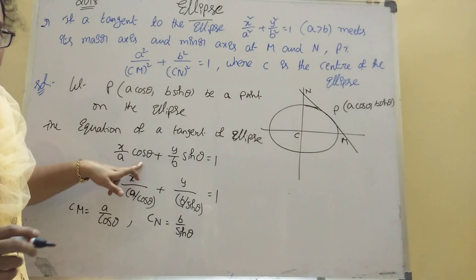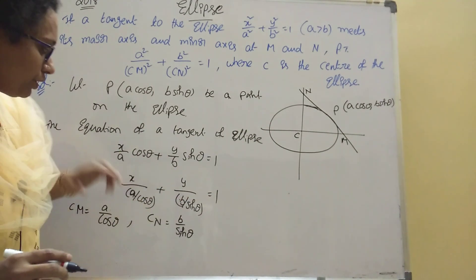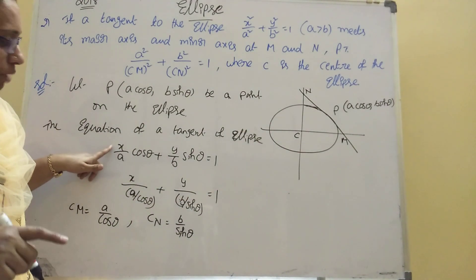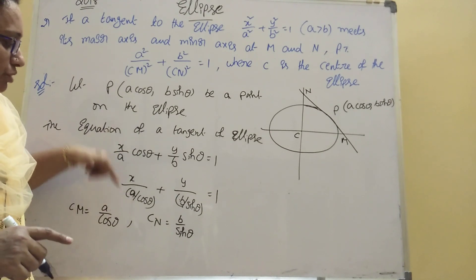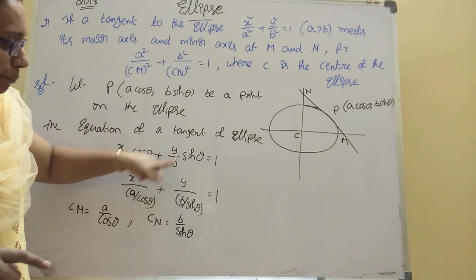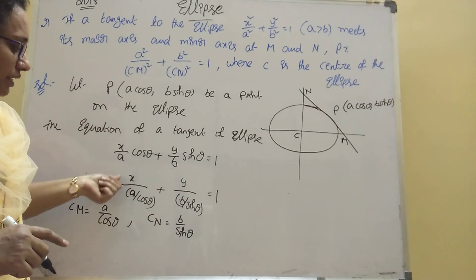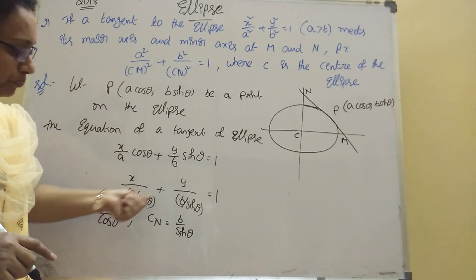The tangent formula is x/(a cosθ) + y/(b sinθ) = 1. Converting to intercept form, the x-intercept is a/cosθ and the y-intercept is b/sinθ.